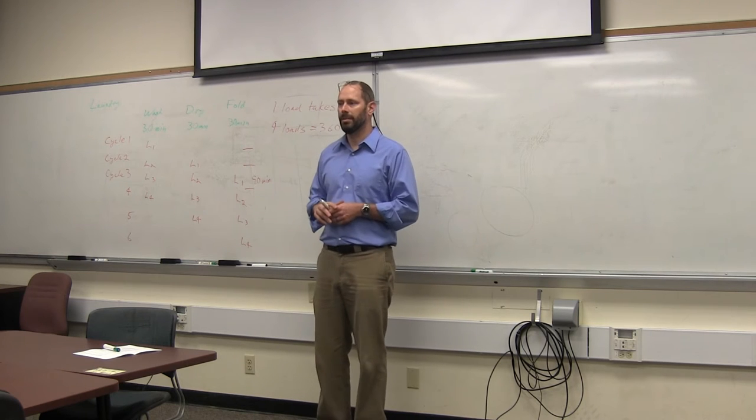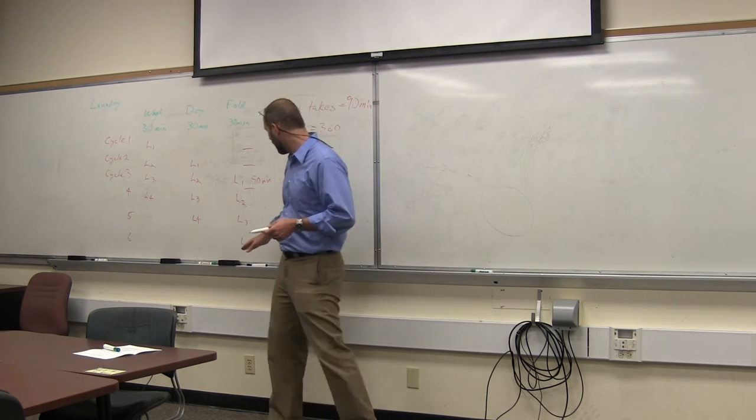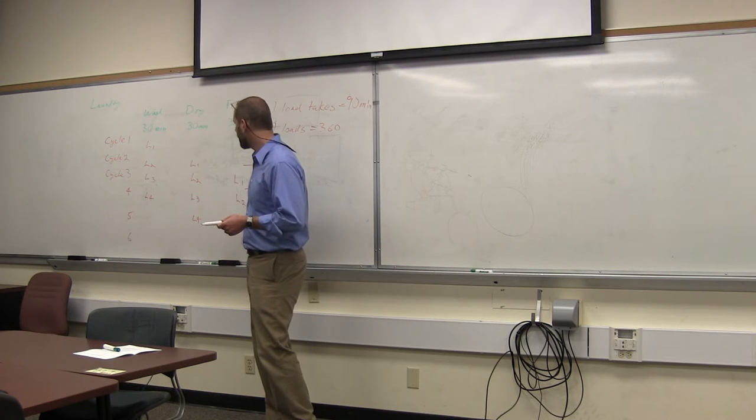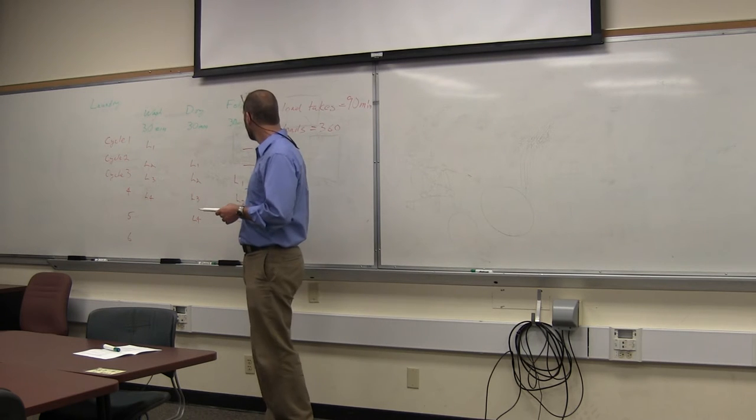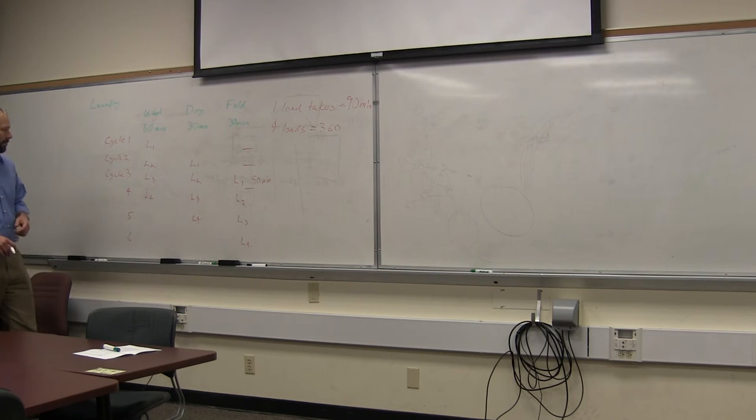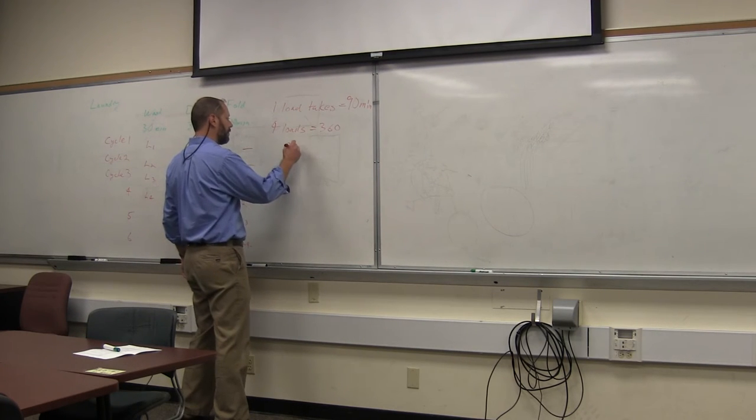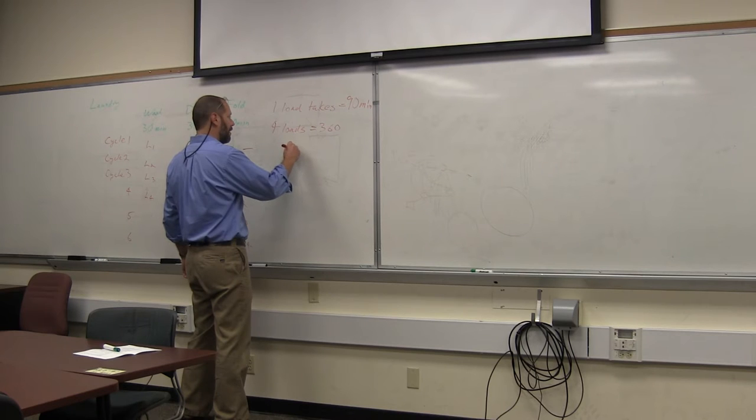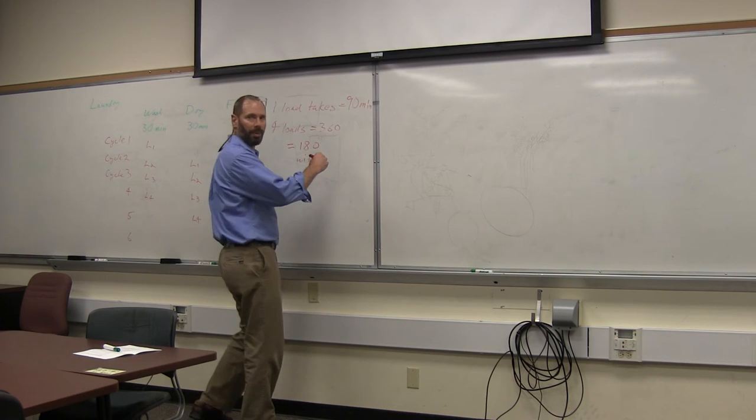So how long does it take now to do four loads of laundry using this pipeline scheme? How many cycles does it take? Six. One more. This one's in the fold stage at the sixth cycle, and it'll be done at the start of the seventh. So six complete cycles.